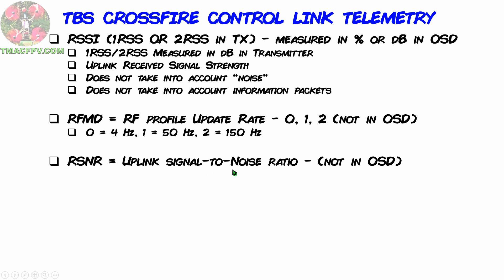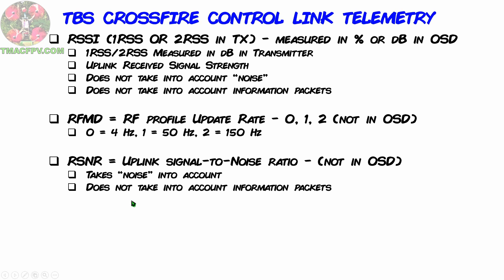RSNR is your uplink signal-to-noise ratio, measured in dB, and is also not available in your OSD but is available as a value within your transmitter. It does take noise into account — back to our sports stadium analogy, it would compare the loudness of your voice to that of the overall crowd in the stadium. However, it does not take into consideration whether or not your friend at the end of the aisle can actually understand what you're saying.